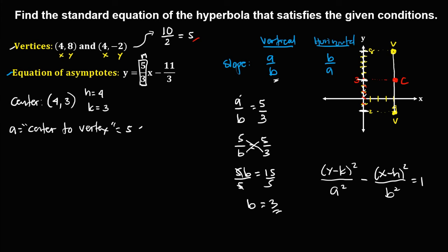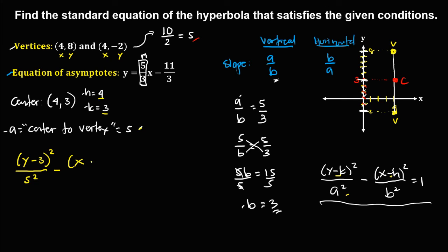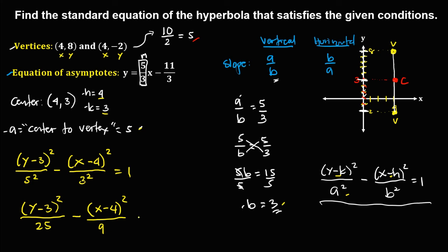Now that we have all four values — h, k, a, and b — we can write the standard equation. Substituting: (y - 3)² / 5² minus (x - 4)² / 3² equals 1. Simplifying, this becomes (y - 3)² / 25 minus (x - 4)² / 9 equals 1. This is the standard equation of this hyperbola.